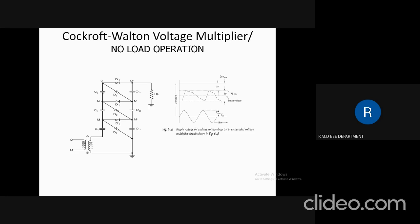During the negative half cycle, diodes D1, D3, and D(2N−1) will be conducting, and capacitors C1, C2, C3, and C(2N−1) will be charged to a value of Vmax. In this manner, we are able to obtain a voltage doubled value with respect to the number of capacitors and number of stages connected in the circuit.